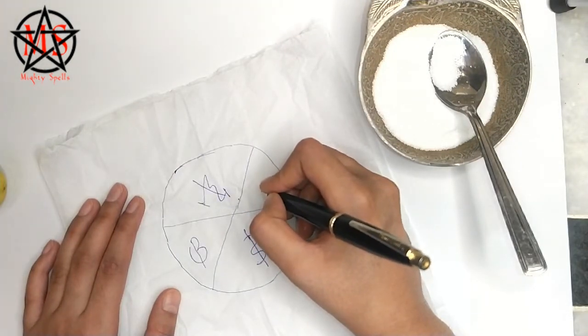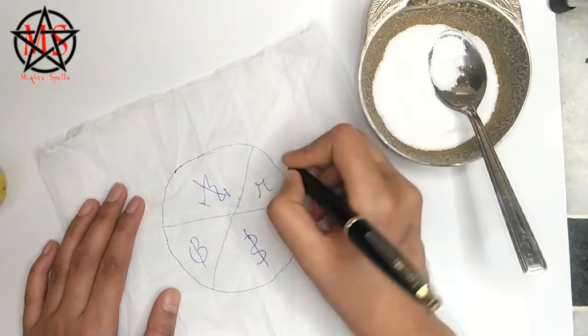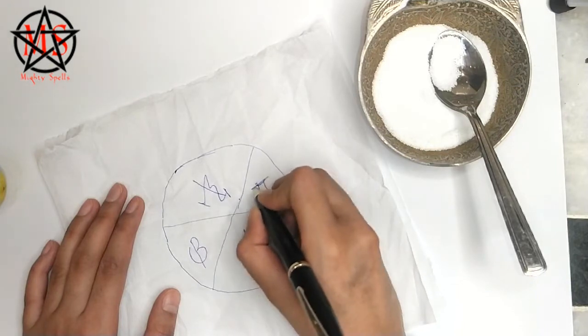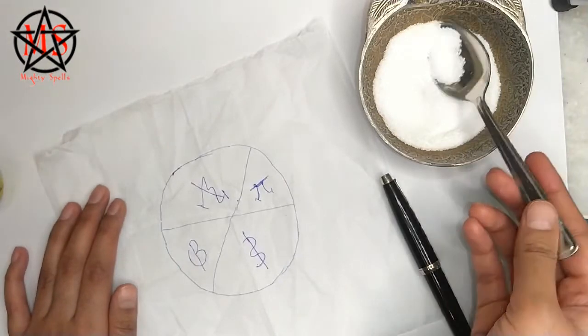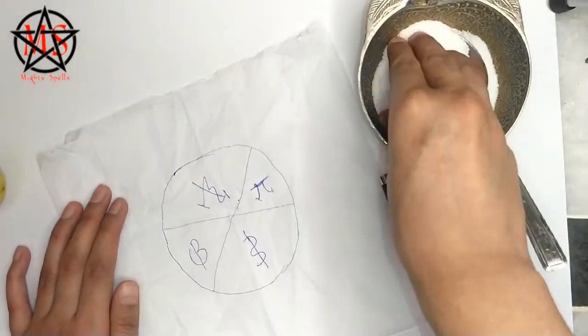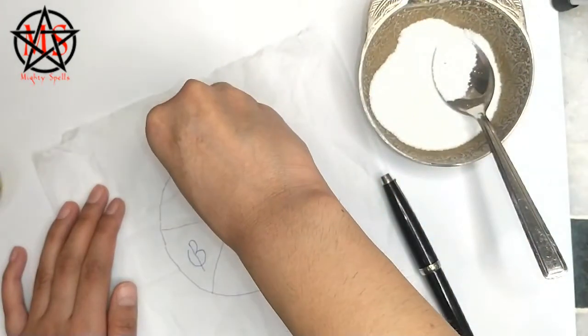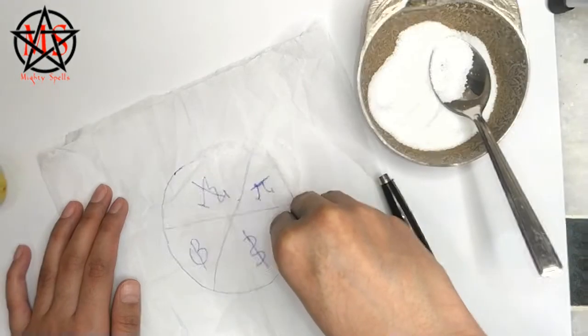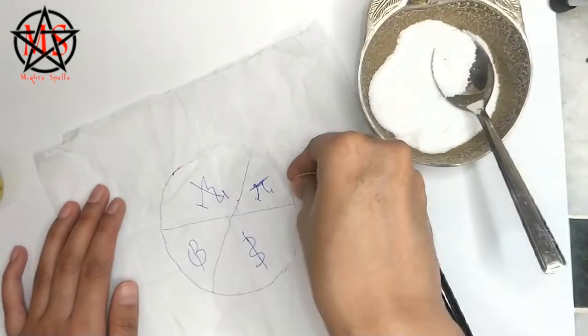And lastly, you have to make very simple letters like this. Now you have to take the salt by your hands and put the salt around like this. And while you do so, you have to chant a very simple spell.